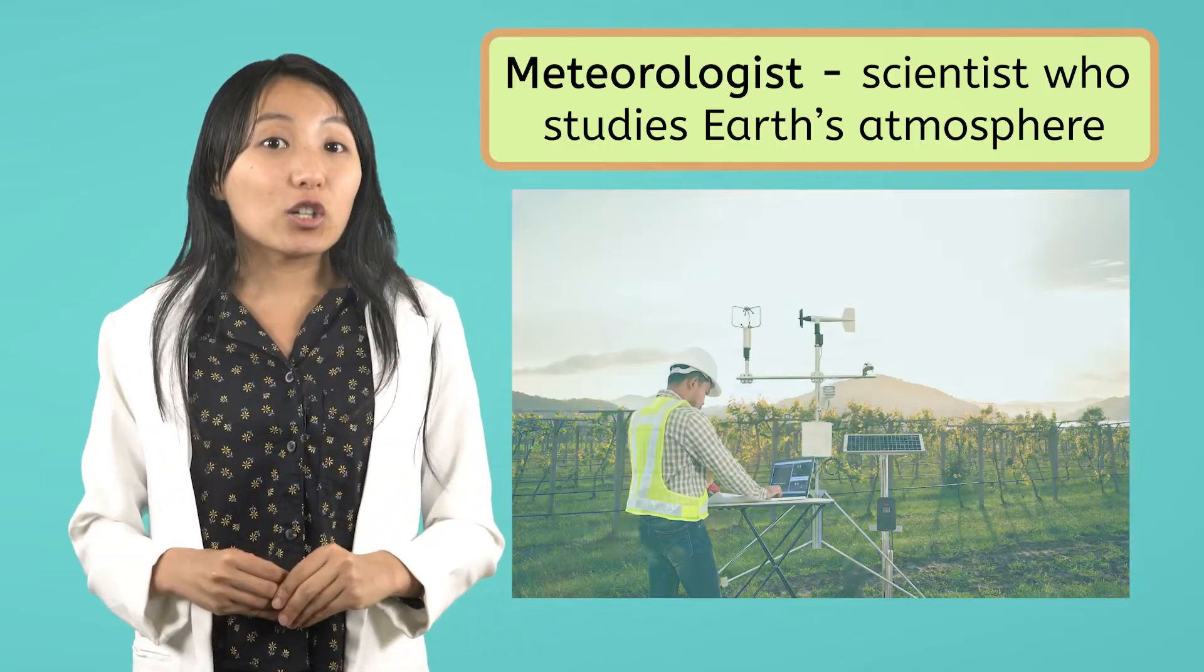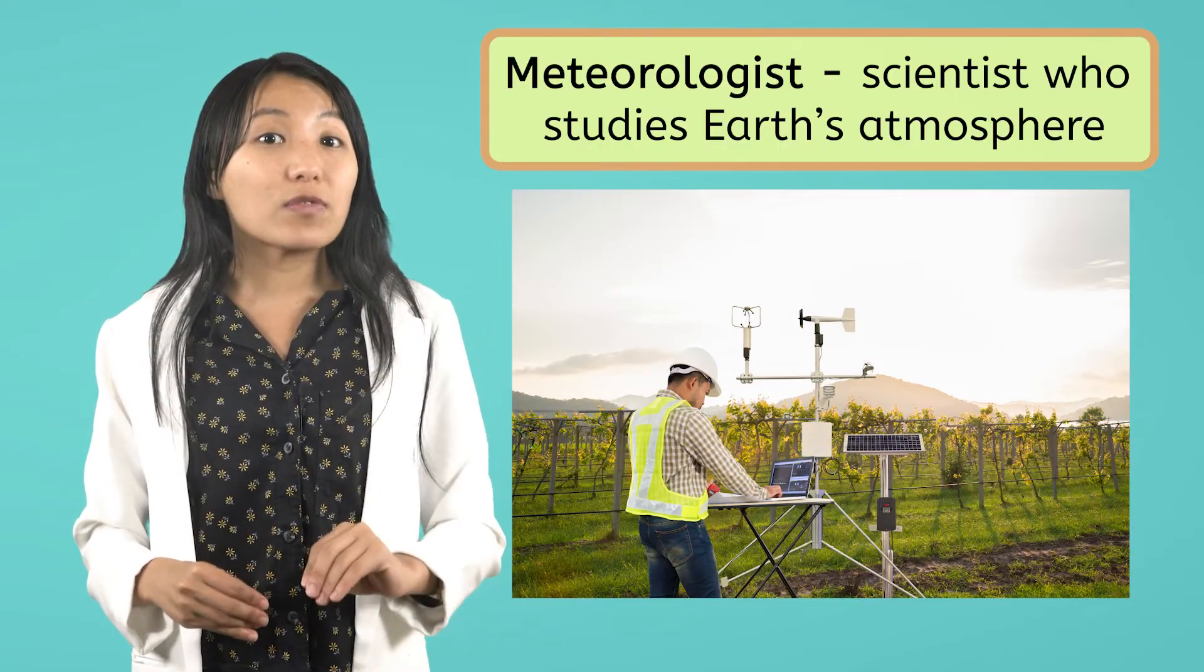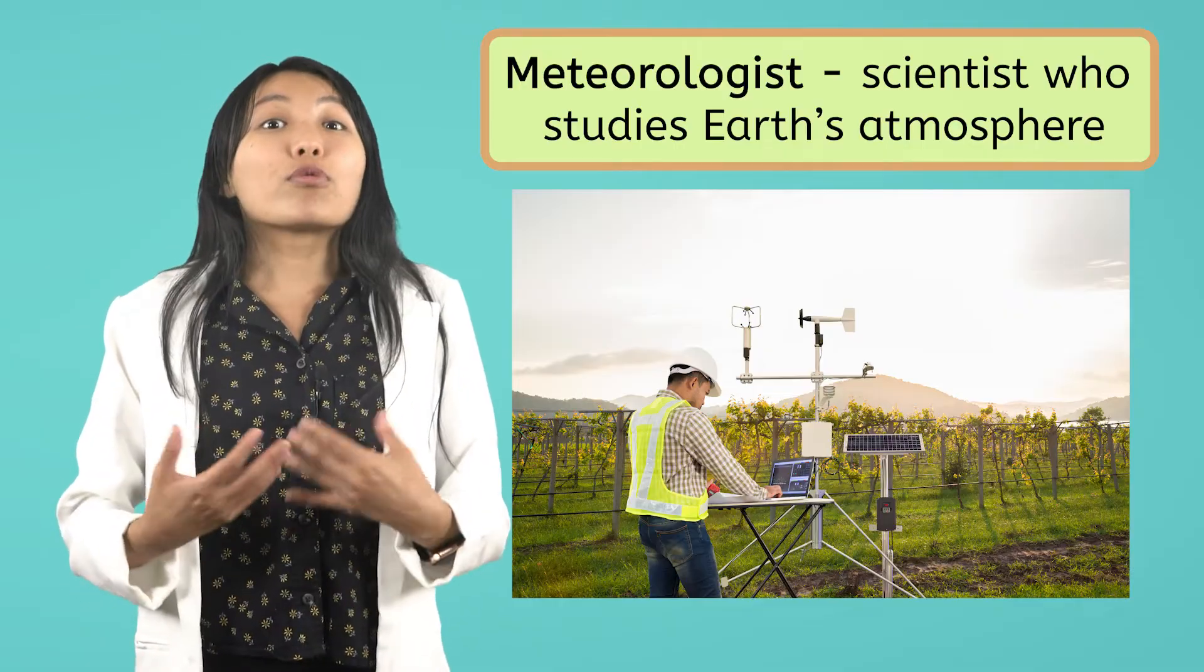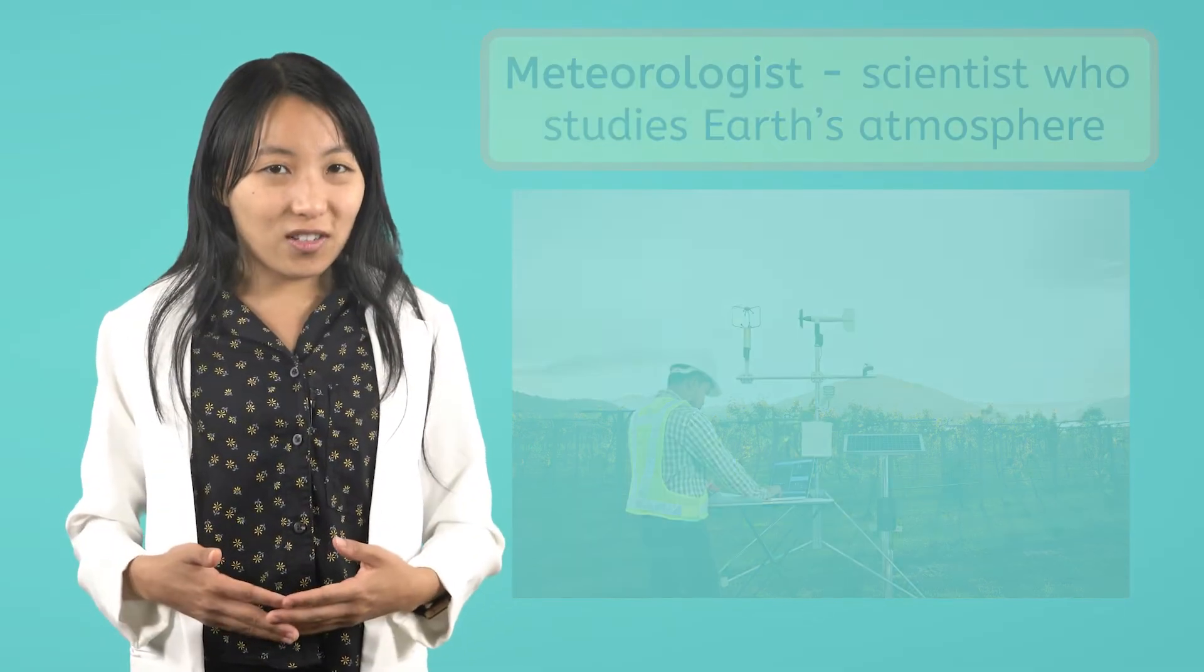Now, Zeke has been feeling pretty down today with this rainy weather, so I wanted to show him something that just might cheer him up. On Earth, we have scientists called meteorologists. Meteorologists study Earth's atmosphere to understand and predict the weather. By studying the elements of weather, like temperature, precipitation, cloudiness, and wind, meteorologists are able to predict changes in weather many days ahead of time.